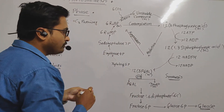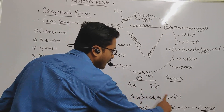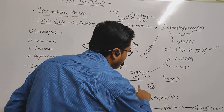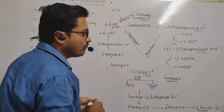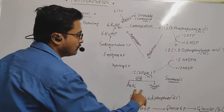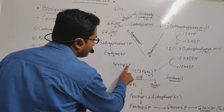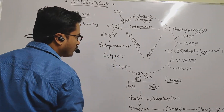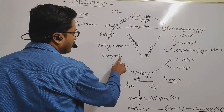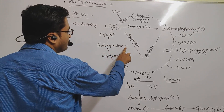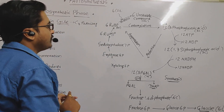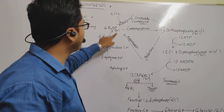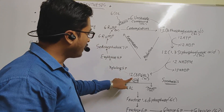The last step is regeneration. Out of 12 PGAL molecules, 2 were used for glucose synthesis, so 10 molecules remain. These 10 molecules are used in regeneration. The first compound formed is xylulose 5-phosphate (5-carbon compound), then erythrose phosphate (4-carbon compound), then sedoheptulose (7-carbon compound), and then RuMP — meaning regeneration of ribulose monophosphate. 6 molecules of ribulose monophosphate are regenerated.